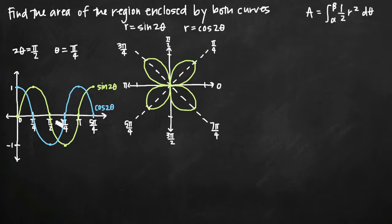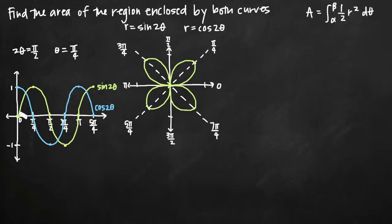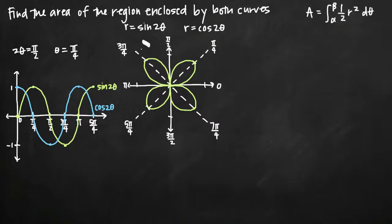So we mark off π/4, π/2, 3π/4, π, etc. on the x-axis, and then we want to sketch both curves on this x-y coordinate plane, checking the values of each curve at each increment. For sine of 2θ — the curve in green — we plug in 0: sine of 0 is 0, so we plot the point at (0, 0).